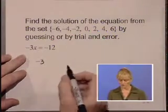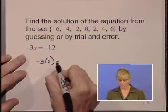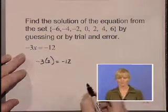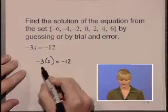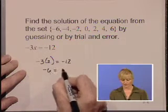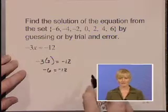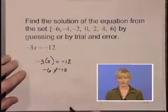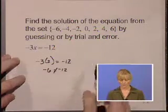We'll start by substituting in 2 and simplifying the left-hand side. -3 times 2 is -6, which does not equal -12. We'll move along to our next choice.